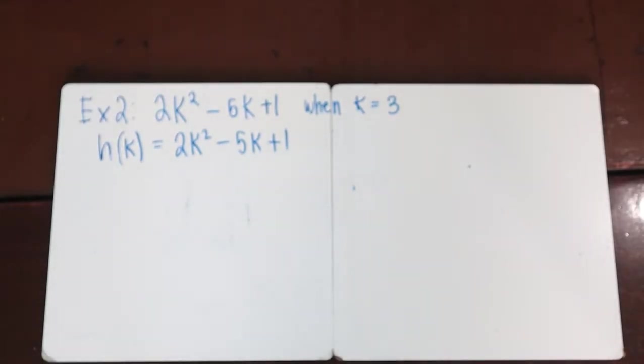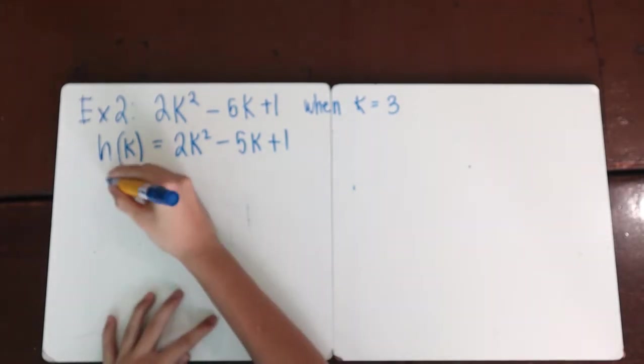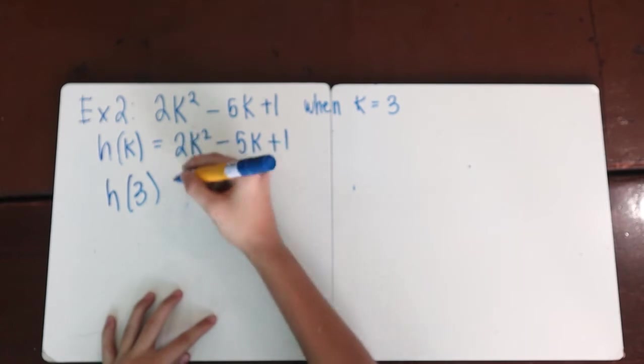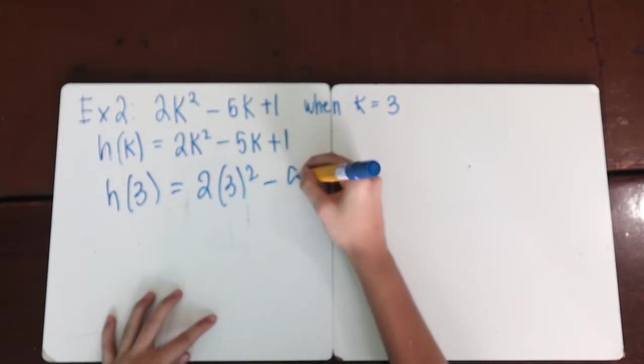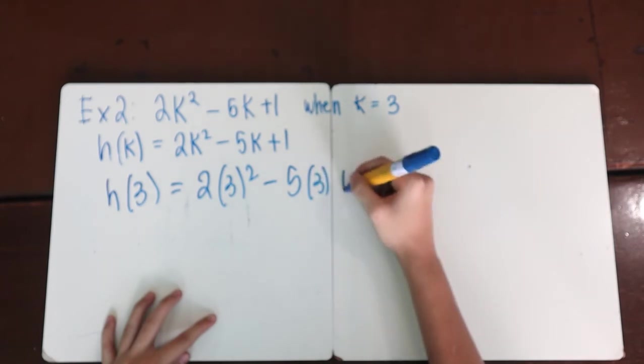Let's try another example. Example number 2: h(k) = 2k² - 5k + 1, when k equals 3. Observe that the function here is h, and the input value is k. Just like in our previous example, we want to substitute whatever numerical value assigned to k into the given function and simplify. So h(3) equals 2(3²) - 5(3) + 1.